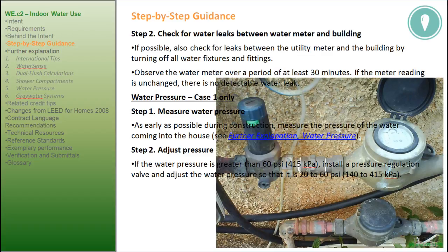Water leaks, Step 2: check for water leaks between the water meter and the building. If possible, also check for leaks between the utility meter and the building by turning off all water fixtures and fittings. Observe the water meter over a period of at least 30 minutes. If the meter reading is unchanged, there is no detectable water leak.